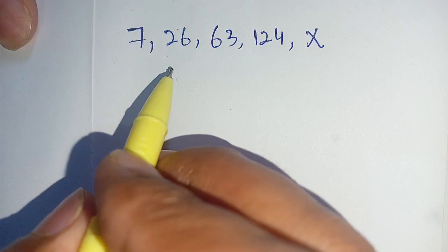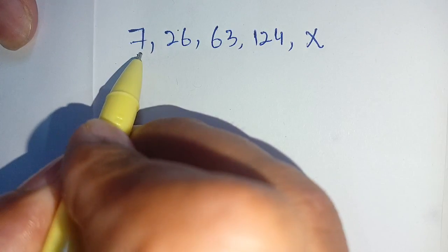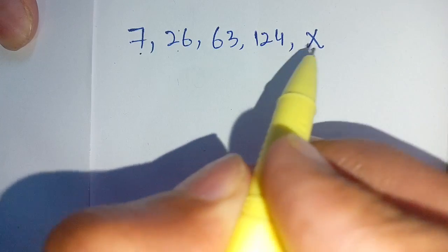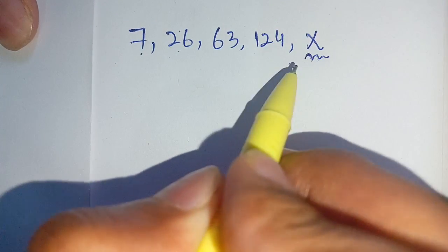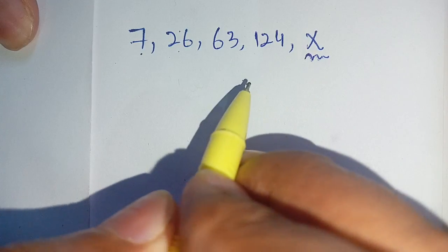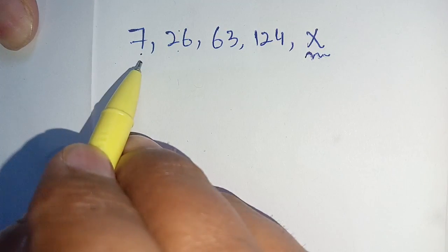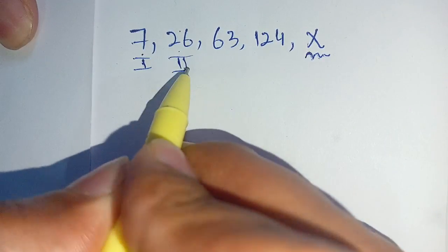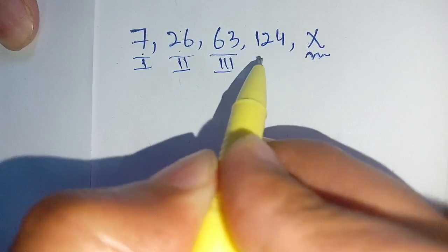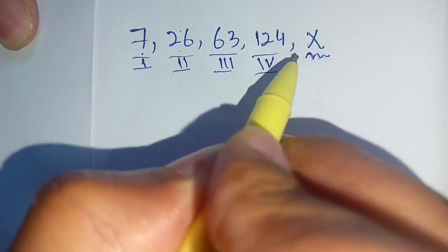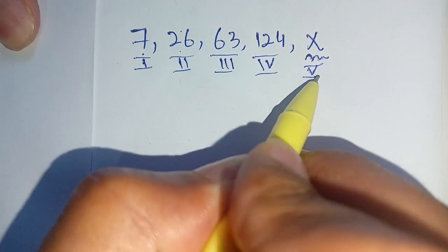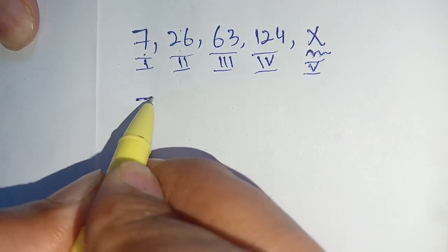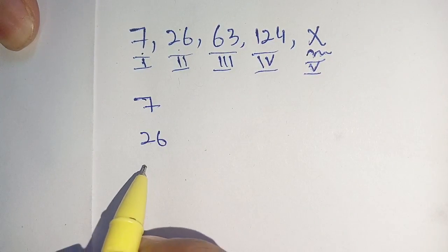Hello everyone. How to solve this missing number series? Here is 7, 26, 63, 124, and we have to find the value of x which is replaced by a number. We have to find the relation between these terms. The first term is 7, second term is 26, third term is 63, fourth term is 124, and we have to find the value of the fifth term.